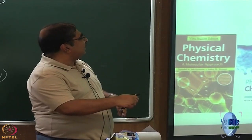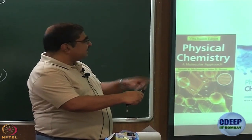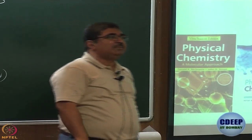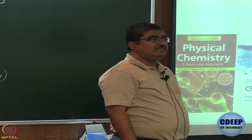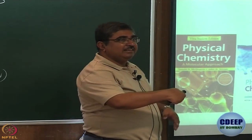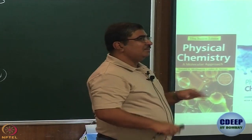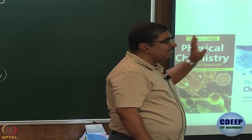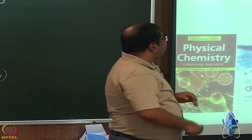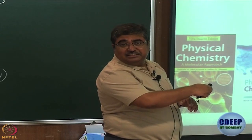So this is your laser light. What is the difference between this laser light and the light that comes out of these lamps? The first thing you can see is intensity - it is very bright. So intensity is very very strong. The second thing is what is the colour of this light that you can see?